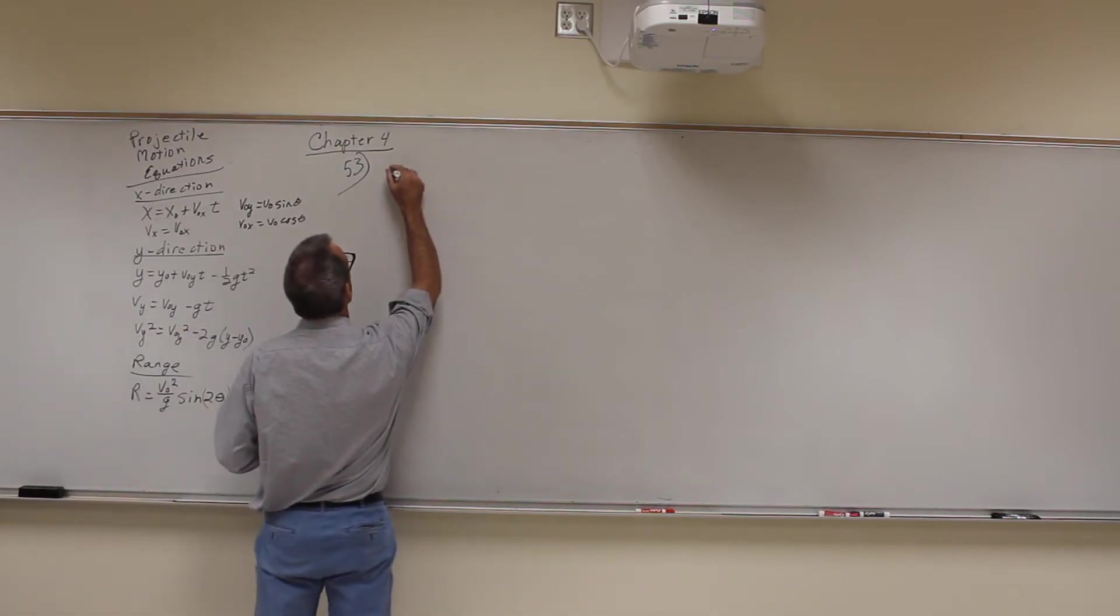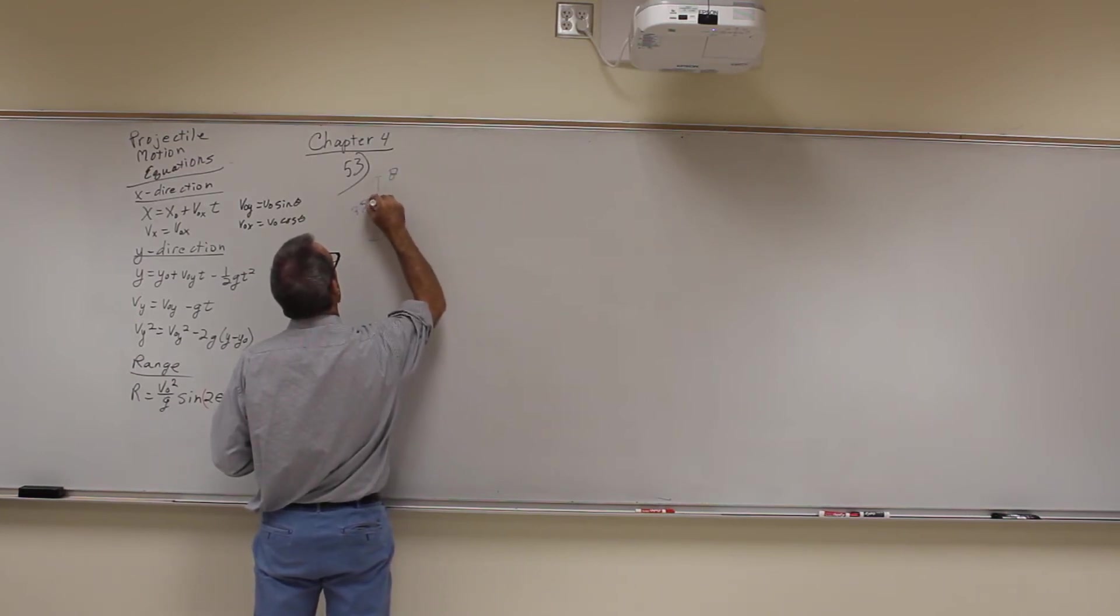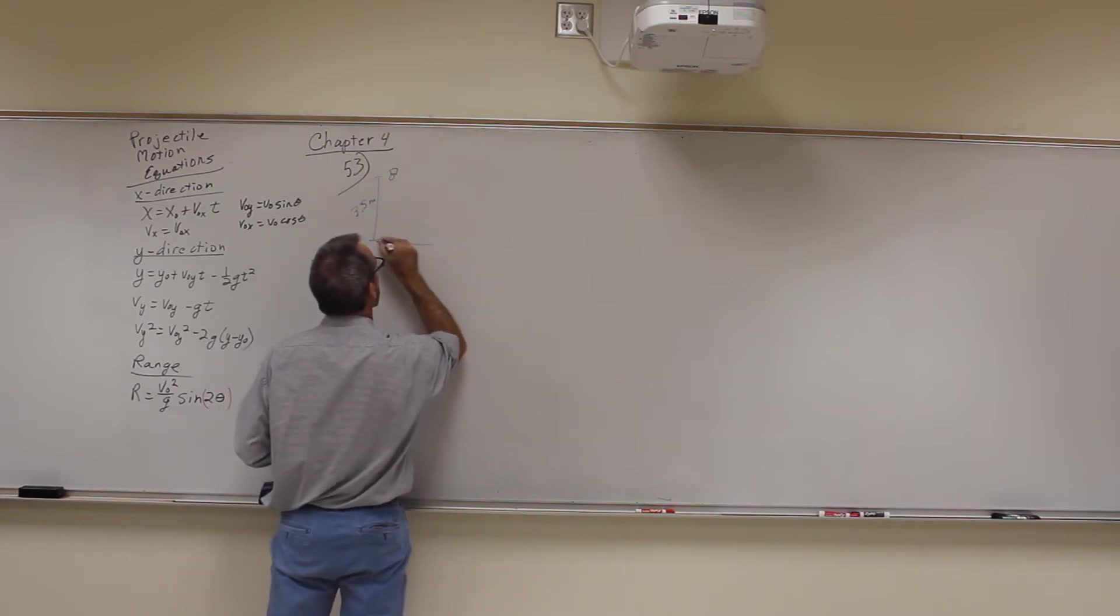So what we have is an electromagnet holding a steel ball at a height of 3.5 meters above the floor. This is the floor right here.